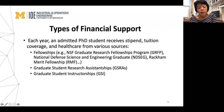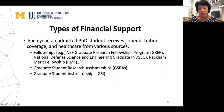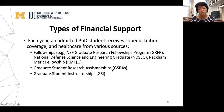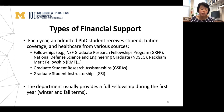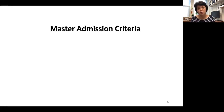For PhD funding: each year, PhD students receive stipend, tuition coverage, and health benefits from various sources. All PhD students are guaranteed funding for the duration of their study. Funding sources include fellowships, research assistantships, and GSI graduate student instructor positions. The department typically provides a full year of fellowship in the first year for admitted PhD students, allowing you to explore opportunities with different faculty members if you haven't yet decided which area to work in.